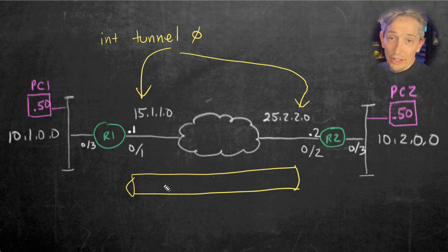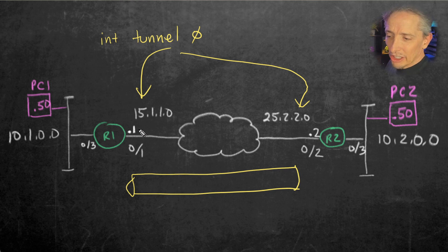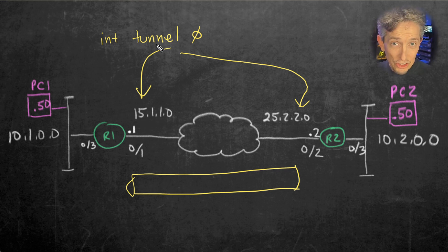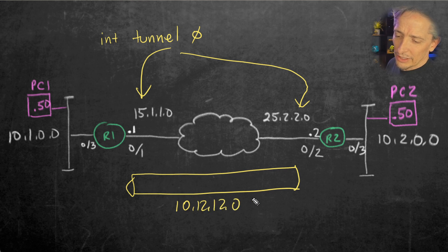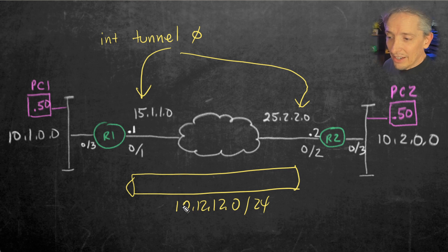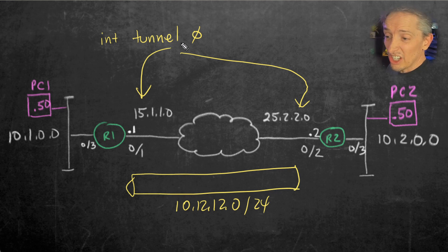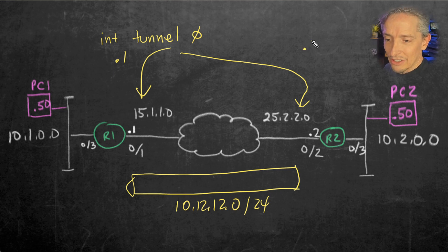Now for these IP addresses, they don't have to be routable on the internet, because these are going to be inside the actual packets — as seen on the internet, packets look like they're coming from 15.1.1.1 going to 25.2.2.2. So the tunnel interface can be any IP address space we want to use. We could say we want this tunnel to be the 10.12.12.0 network, and then give IP addresses in that subnet to each router interface — maybe dot one on R1 and dot two on R2.